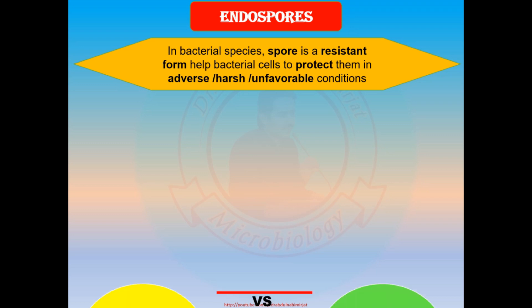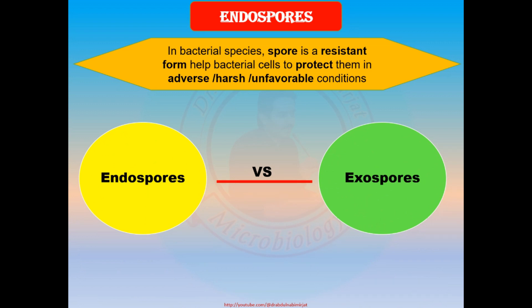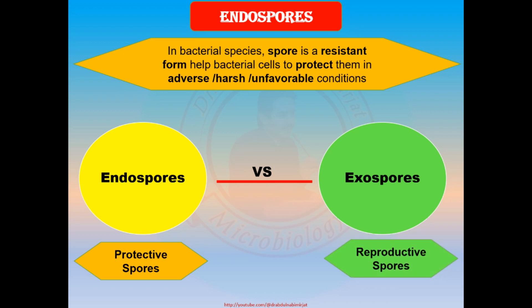Spores may be classified as endospores or exospores. Endospores are produced inside a cell and are considered protective spores — they help bacteria protect against unfavorable conditions. Exospores are produced external to the cell and are considered reproductive spores. Most fungi produce spores externally and they play a role in reproduction.